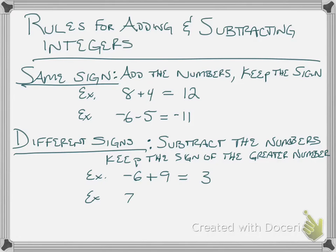If I have 7 minus 11, you subtract the numbers, 11 minus 7 is 4. You keep the sign of the greater one. 11 is greater than 7, so it stays a negative.